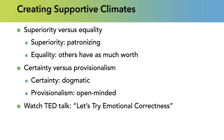The last pair is certainty versus provisionalism. Certainty is very dogmatic — the feeling that there's only one way to do things. For example, many years ago I read an article about Taco Bell and other fast food chains like McDonald's refusing to raise wages for migrant workers picking tomatoes. I told my kids, 'We are boycotting — we are not going to eat at Taco Bell.' That's very dogmatic.